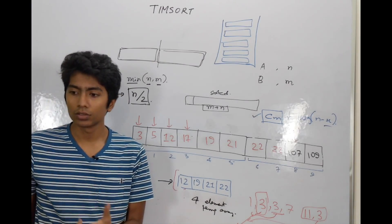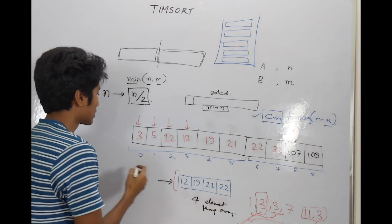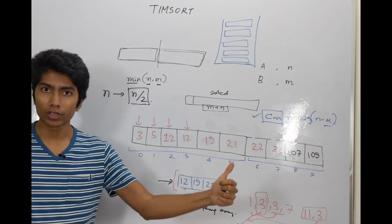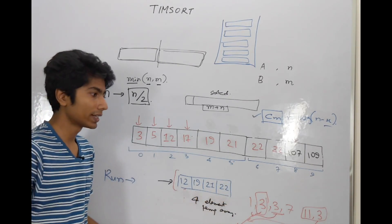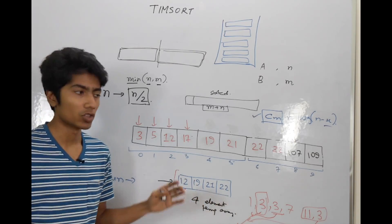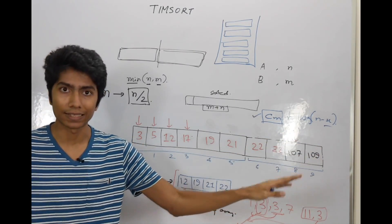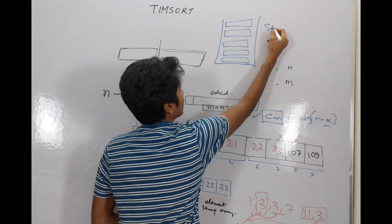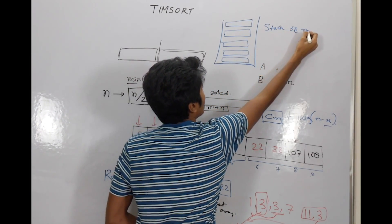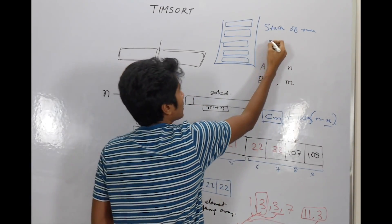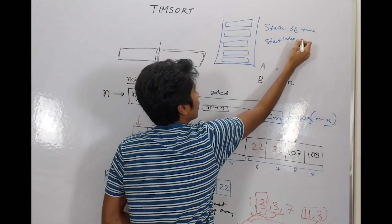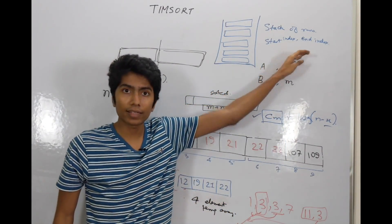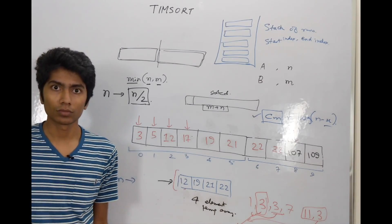Now, a chunk in the timsort algorithm is known as a run. A run because the chunk is sorted, it's non-decreasing. So it's like you're running in the elements, you're increasing continuously or at least you're not decreasing. So that's what a run is. So this stack of runs is going to be storing each run as a start index and an end index such that all elements between the start and end index are non-decreasing.